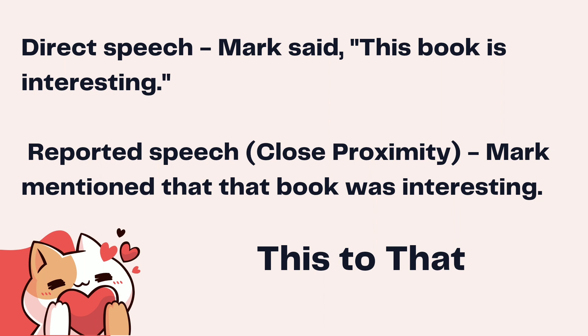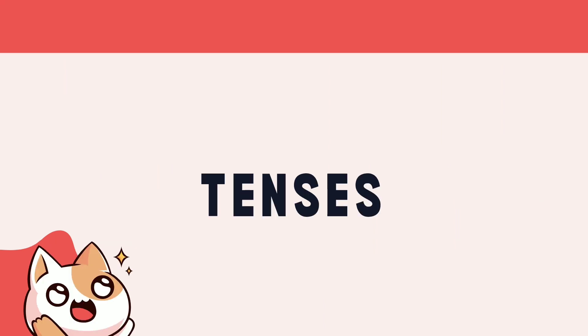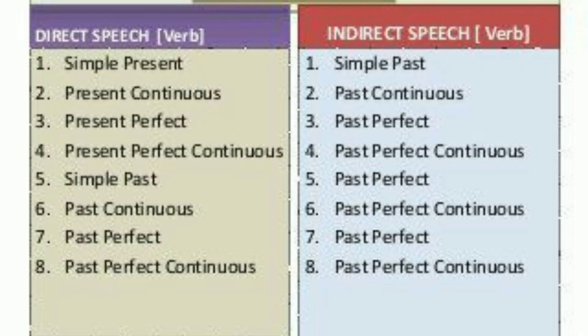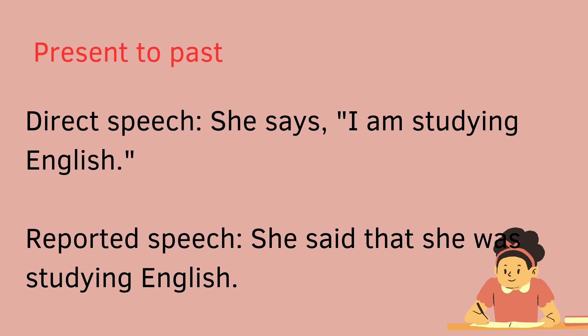Section 5: Tenses. Additionally, tenses can change in reported speech. Here are some examples. Present to past: when we report something said in the present, we often change it to the past in reported speech. This makes the conversation feel like it happened in the past, even if it's being reported now. For instance, direct speech: she says, 'I am studying English.' Reported speech: she said that she was studying English.